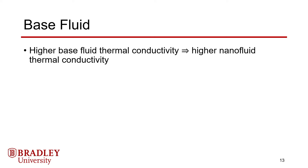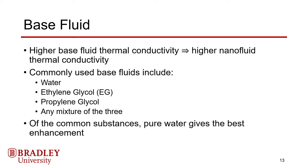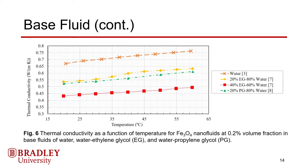When researching the effects of the base fluid used, it was determined that a base fluid with a higher thermal conductivity results in a nanofluid with a higher thermal conductivity. The majority of the research done has used either water, ethylene glycol, propylene glycol, or any mixture of the three as base fluids. Of these, it is widely accepted that pure water, which has the highest base fluid thermal conductivity, gives the best enhancement. Shown here are sets of thermal conductivity data for 0.2% Fe3O4 nanofluids with different base fluids. Pure water clearly has the highest thermal conductivity, followed by base fluids with 80% water and lastly 60% water, strongly supporting the conclusion that water yields the highest nanofluid thermal conductivity.